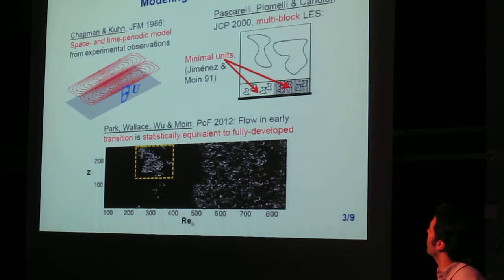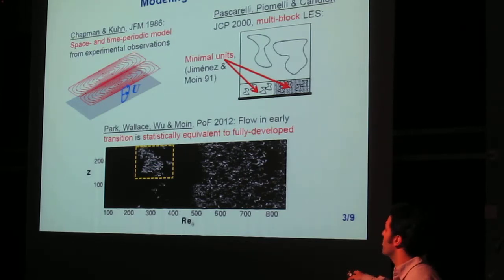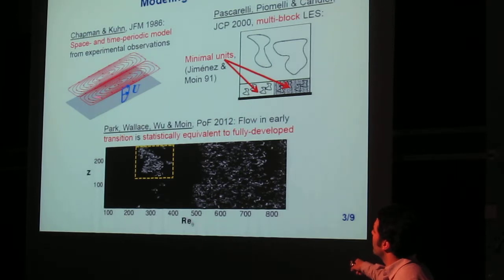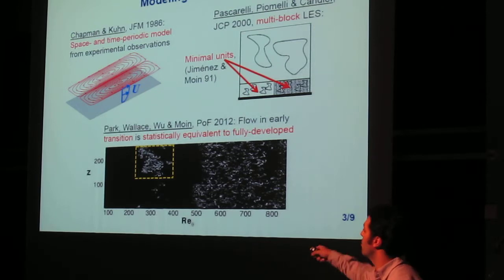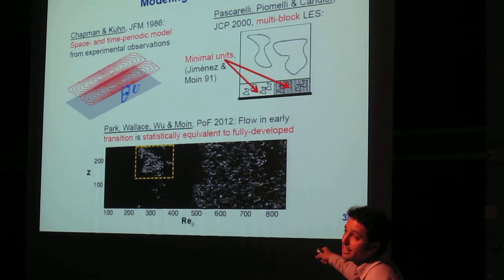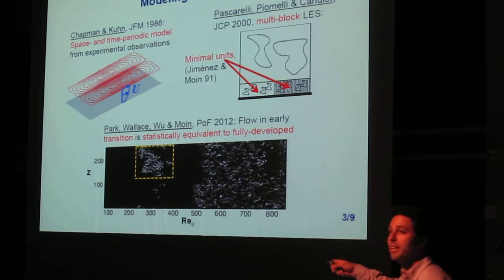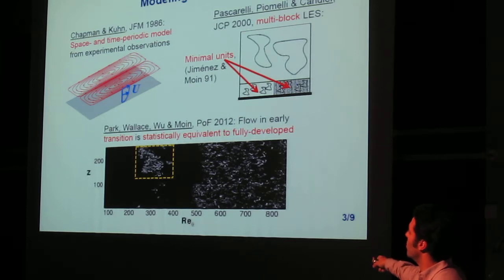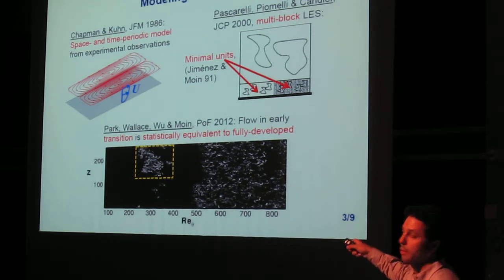So, inspiring works that are behind what we've done would be this seminal work by Chapman Kuhn, which imposed some kind of sinusoidal wave-like velocity plane above the buffer layer, to gather what they knew at the time of the flow in this area to see whether with that they could reproduce the flow or statistics of the flow under that plane.